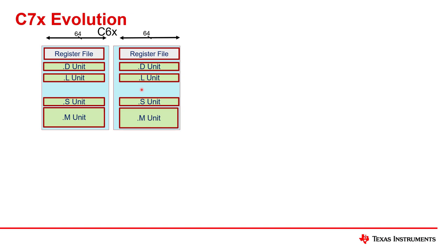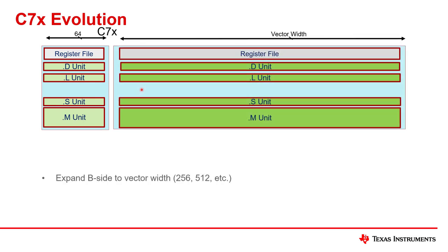When C6000 evolves into C7000, the B side becomes what we call vector width size. A vector width can be either 256 bits or 512 bits — as of this recording those are the two choices available, but that will change over time. For example, with 256 bits, the maximum size of the vector that could be processed by the B side is 256 bits long. Within that vector, you can have elements of 8 bits, 16 bits, 32 bits, and so on — however many a 256-bit vector can hold.